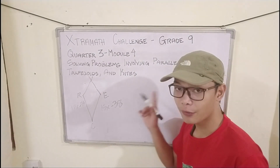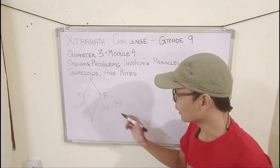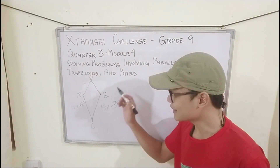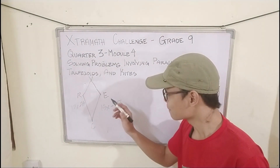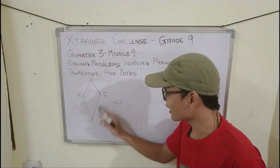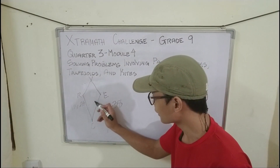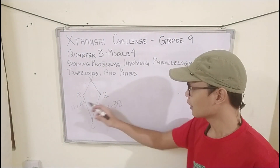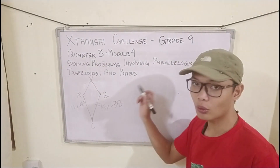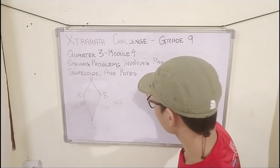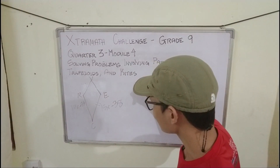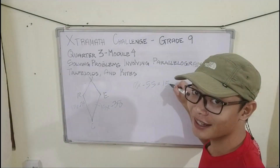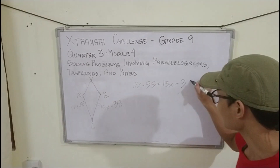To find the length of CR, we first need to find the value of x. Since in a kite the longer sides are also equal, we can equate these two lengths. So: 17x − 55 = 15x − 38.